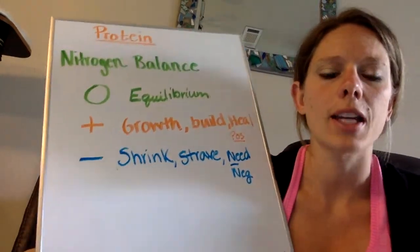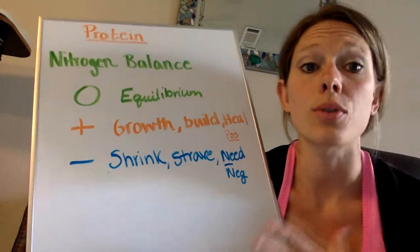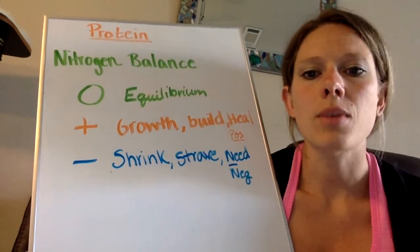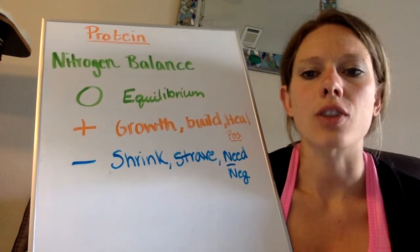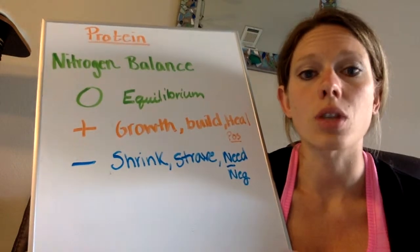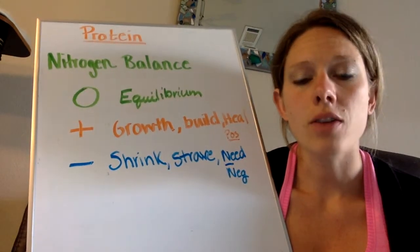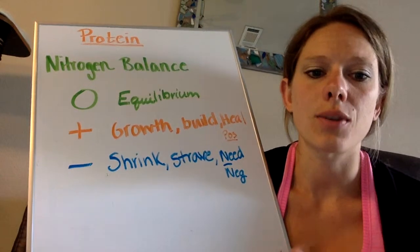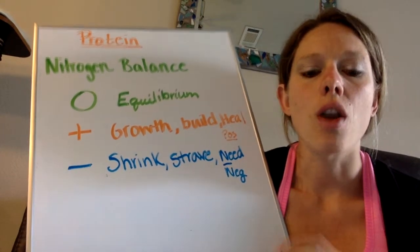Something else to kind of keep in mind is there's something called a net protein utilization, and that's going to measure the amount of protein that's actually used. So we're going to look at nitrogen in minus nitrogen out, and then you divide that by nitrogen in to give you an actual number.